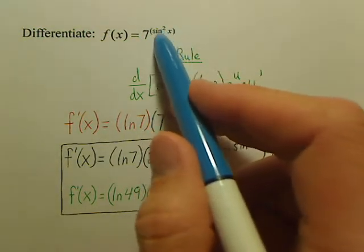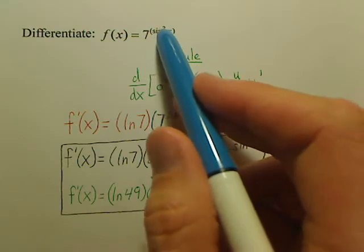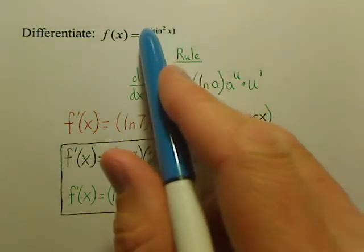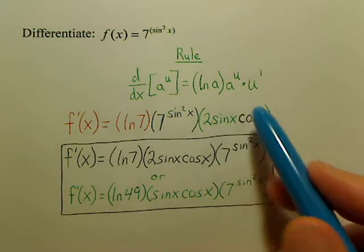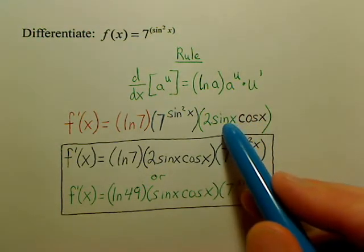The derivative of this, just be careful, this is a chain rule. A lot of people miss that, but this is a chain rule. You're going to take the 2 out front, leave the inside, drop the power by 1, and then derive the inside. The derivative of sine is cosine.